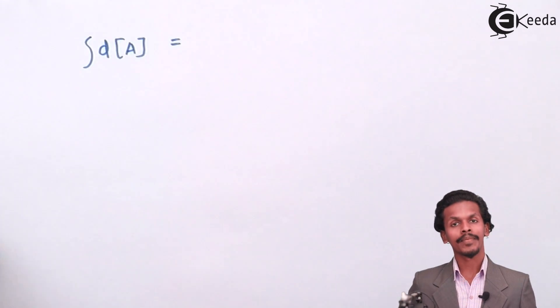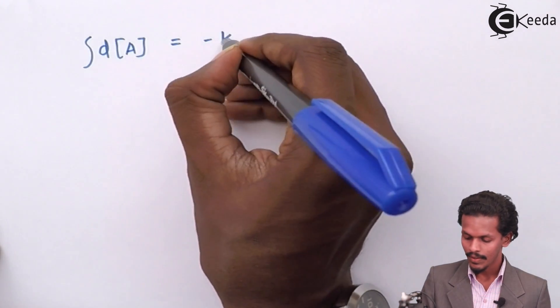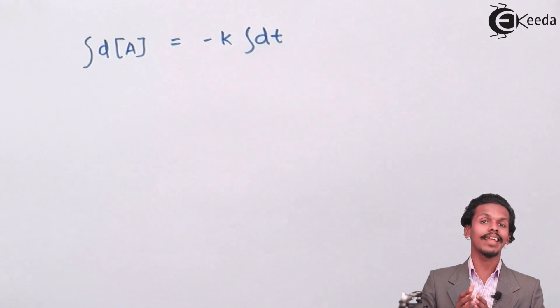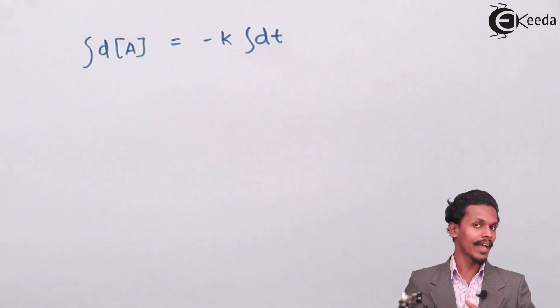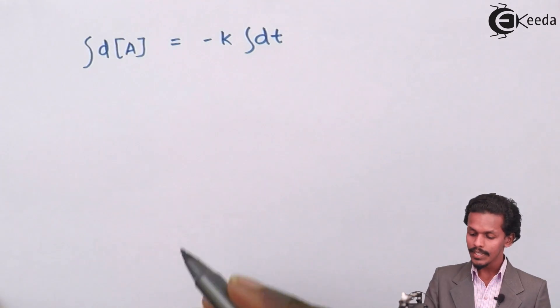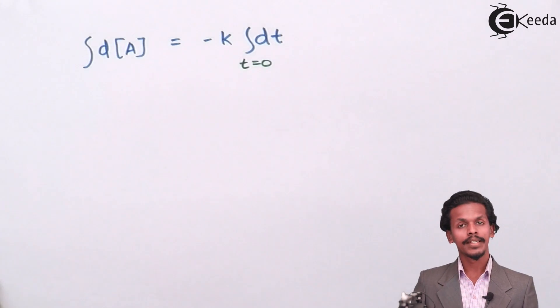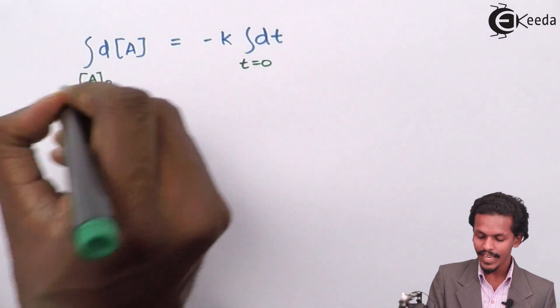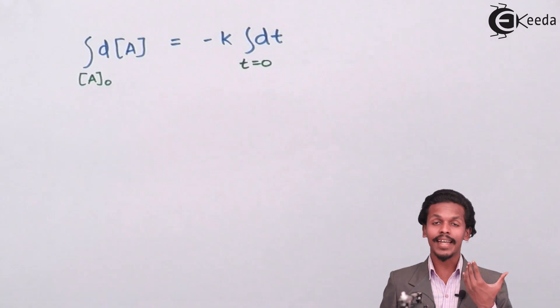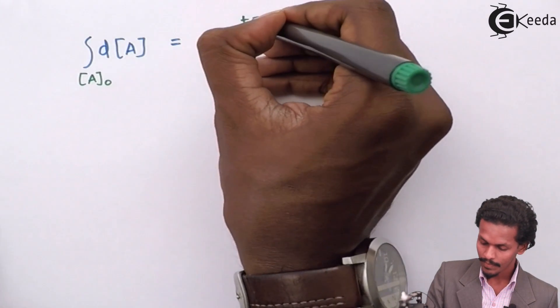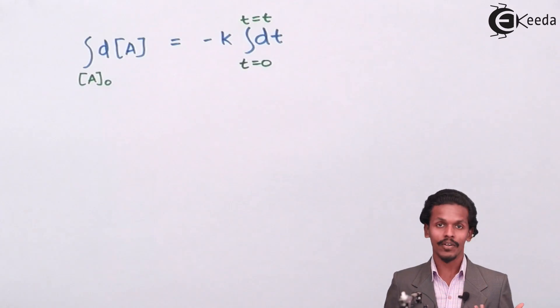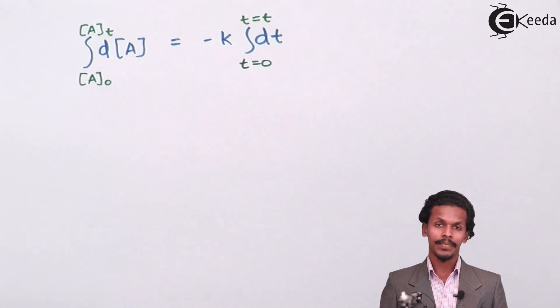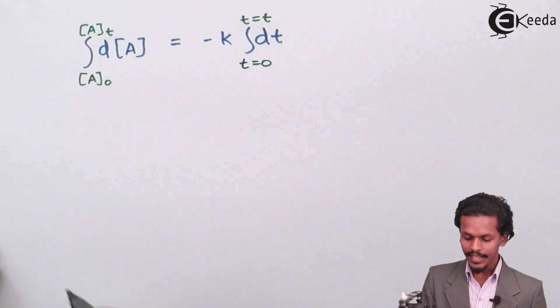Integrating the equation, we need to apply limits. I would consider when the time t equals zero, the concentration of the reactant A would have been [A]₀, and when time t equals t, then the concentration of reactant A would have been [A]ₜ.